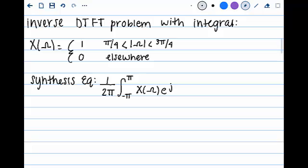Now our DTFT in this problem is x omega equals 1 where the interval is pi over 4 less than absolute value of omega which is less than 3 pi over 4. Elsewhere it is 0.